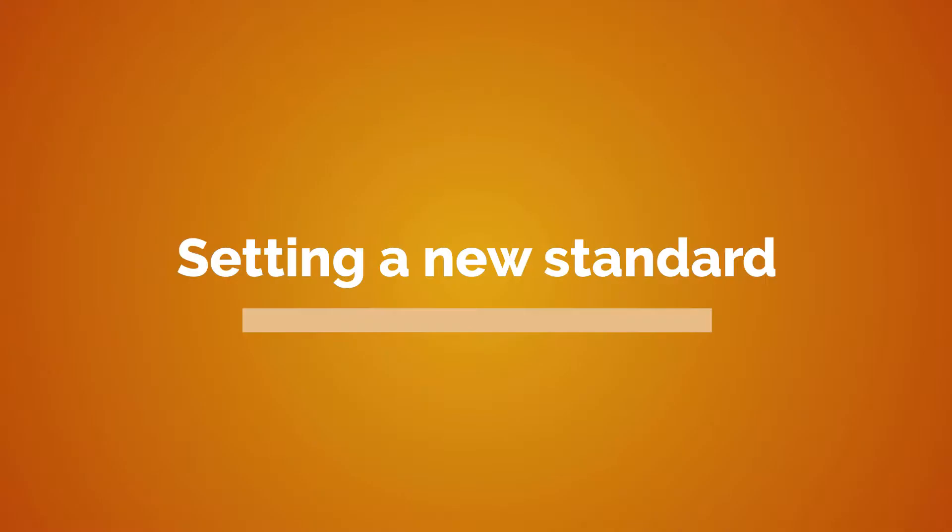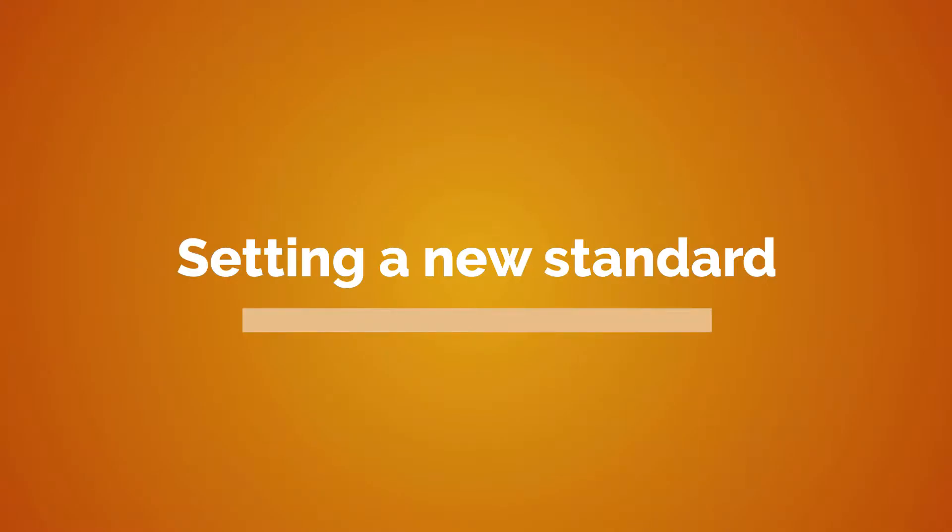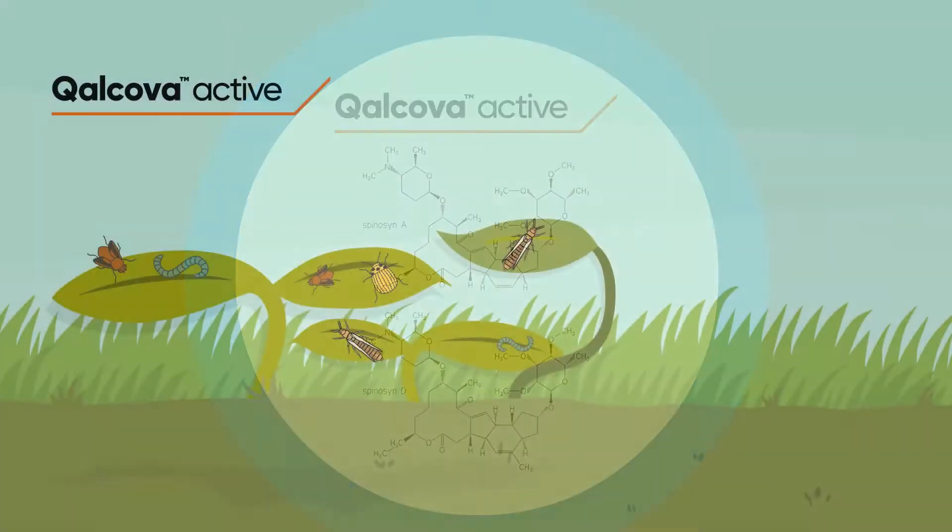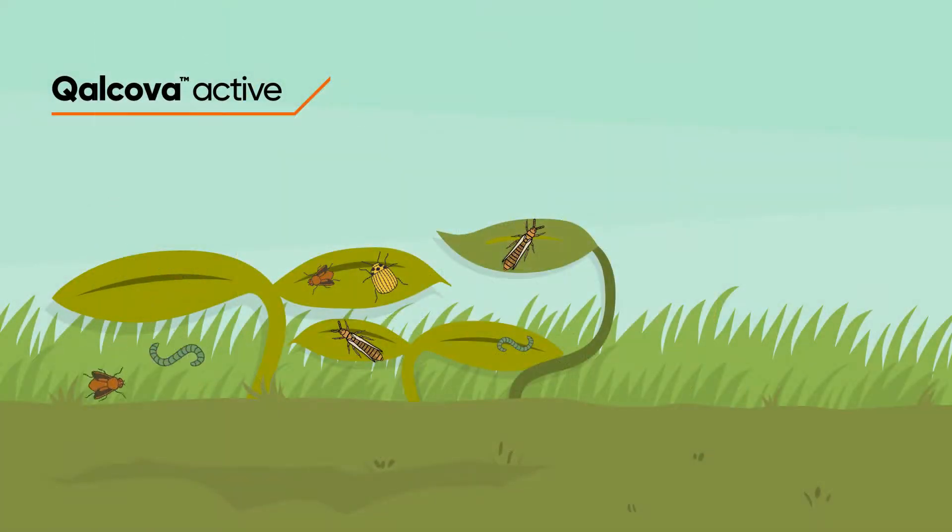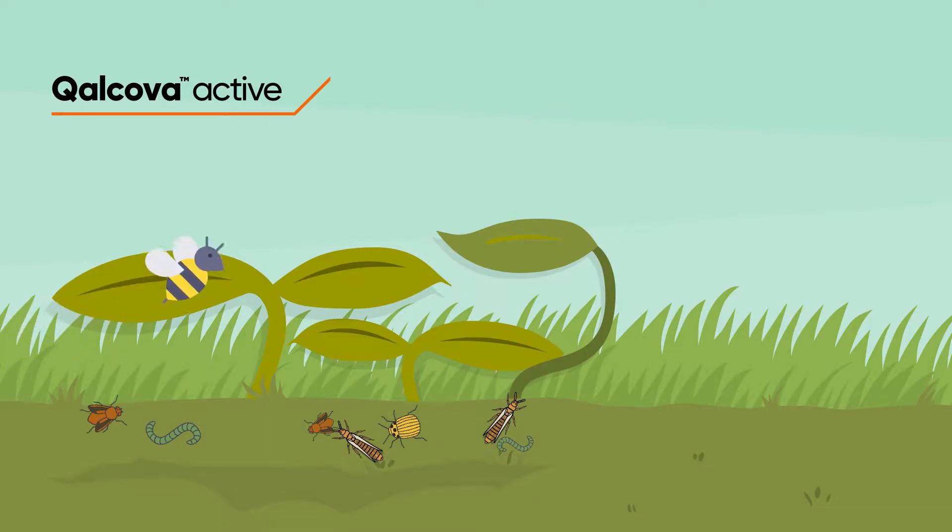With its novel chemical structure and unique mode of action, Qalcova is distinct from other insecticides. It controls damaging insects while its dry residues are harmless to beneficials, including pollinators.